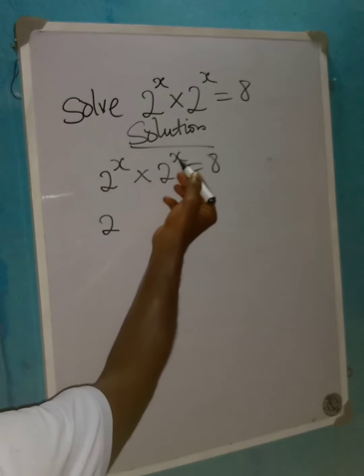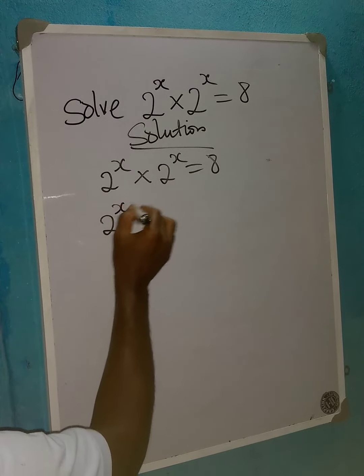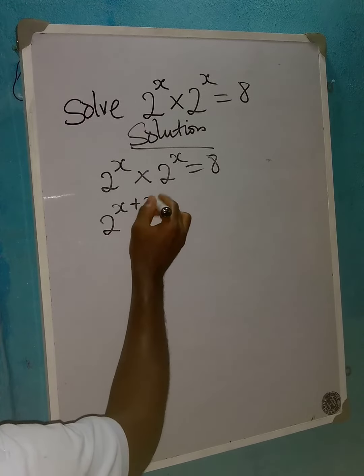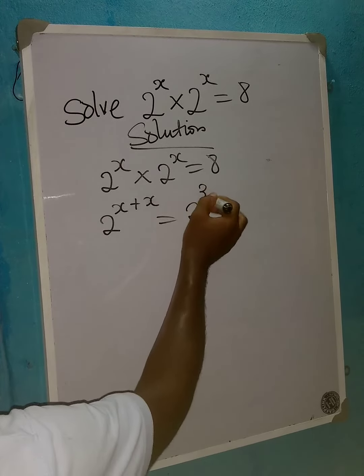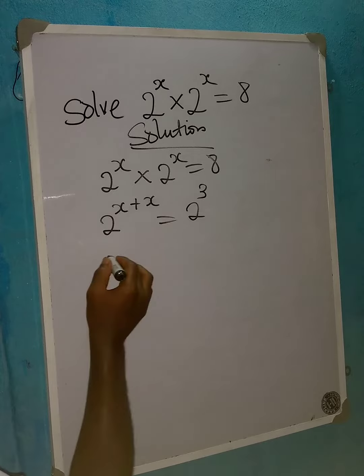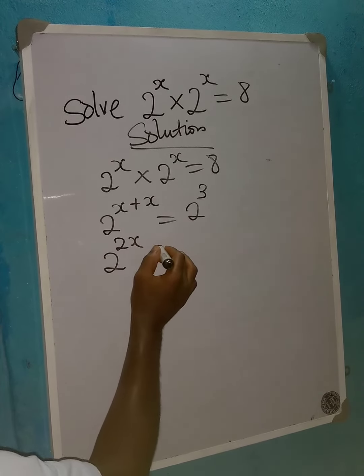So it will be x plus x. 8 is the same thing as 2 raised to power 3, that is 2 times 2 times 2. Then this is now 2 raised to power 2x equal to 2 raised to power 3.